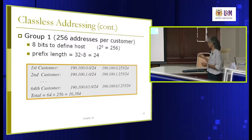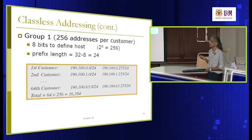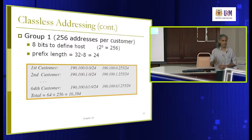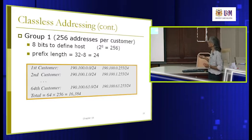The ISP address starts with 190.100. The first customer gets 190.100.0.0 to 190.100.0.255 — that's 256 addresses, slash 24. The second customer gets 190.100.1.0 to 190.100.1.255, and so on for all 64 customers. Total addresses used: 64 customers times 256 addresses equals 16,000 addresses.